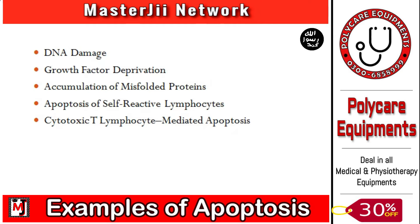Next, we have apoptosis of self-reactive lymphocytes. The role of lymphocytes is to recognize antigens. Lymphocytes are normally produced in our body and can also recognize self-antigens. If these lymphocytes encounter a self-antigen, which is a normal part of our body, they undergo death by apoptosis. This process activates the mitochondrial pathway and the Fas death receptor pathway.